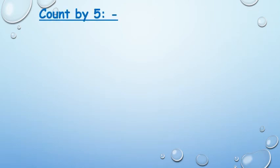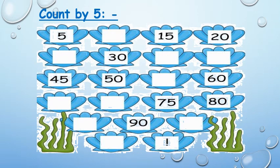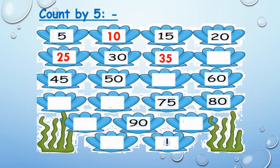Count by 5. How? Counting by 5 means I'll add 5 every time. If I have 5 and add 5 more, 5 plus 5 equals 10. If I have 10 and add 5 more, the answer is 15. 15 and 5 more equals 20. Let's complete: 5, 10, 15, 20, 25, 30, 35, 40, 45, 50, 55, 60, 65, 70, 75, 80, 85, 90, 95, 100.